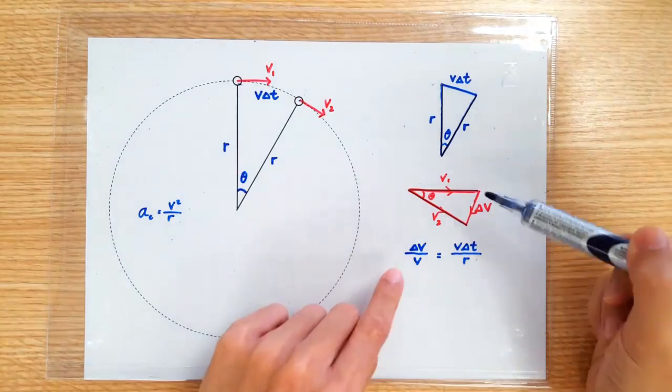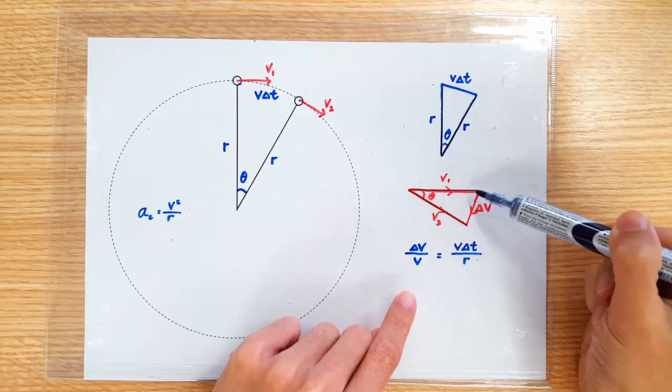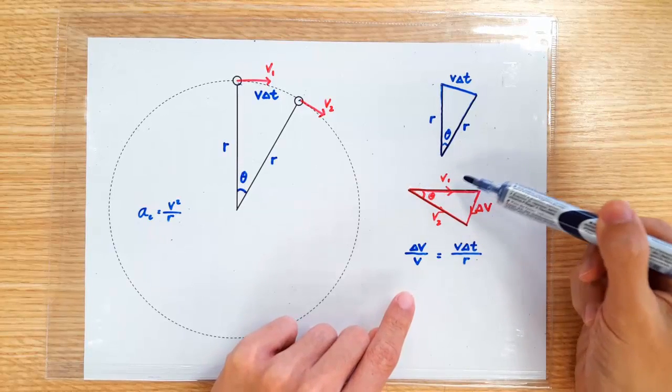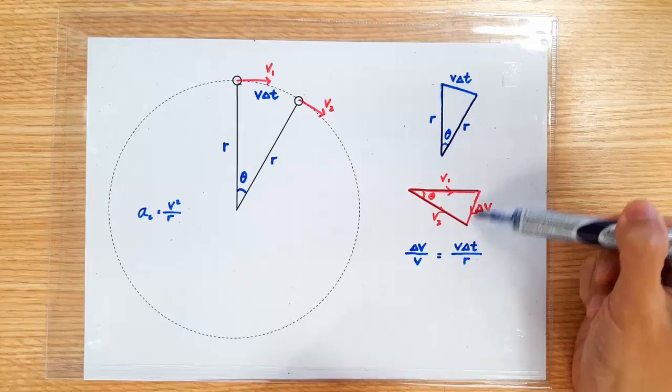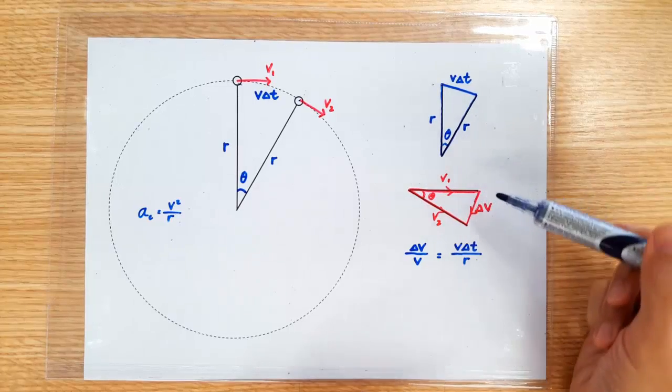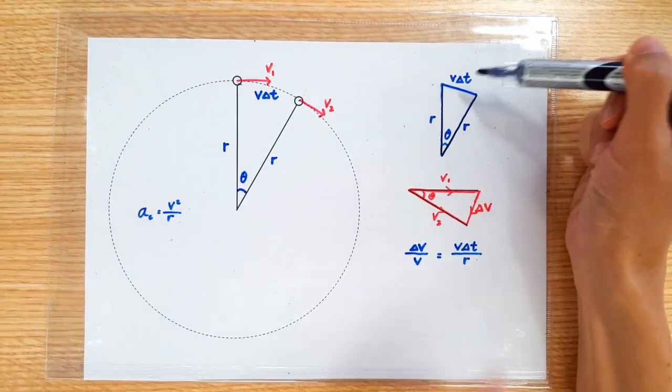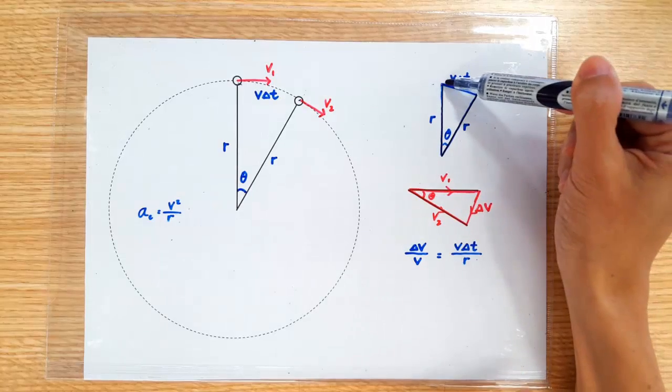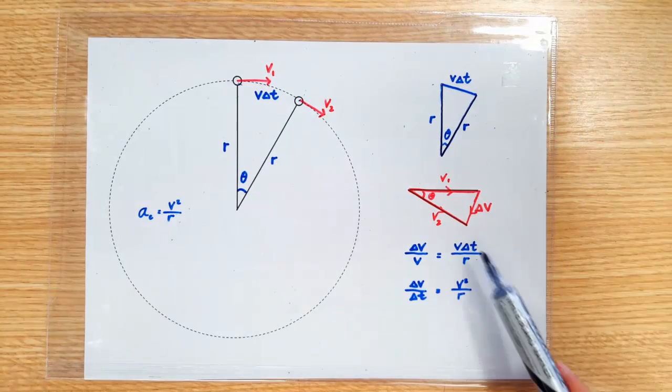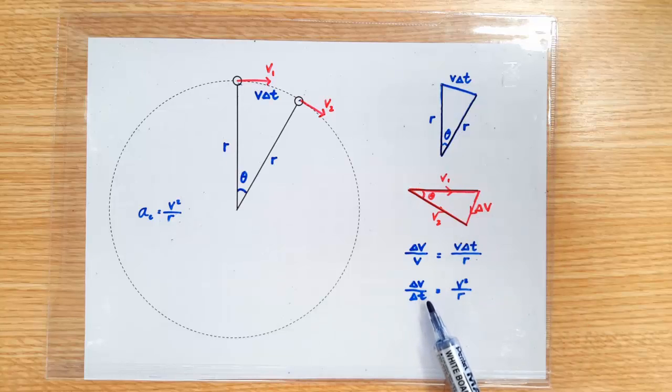So, we can write delta V over V... V1 or V2, but they're the same, so we just call it V. So, delta V divided by V should equal the ratio of the corresponding sides on the other triangle, which is V delta T divided by R. Rearrange the equation. You get delta V over delta T equals V squared over R.